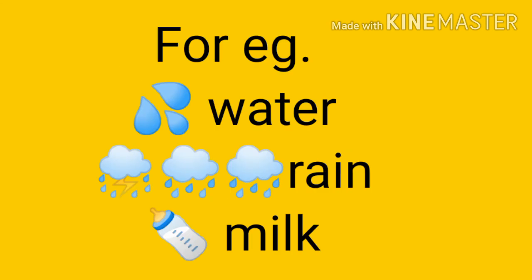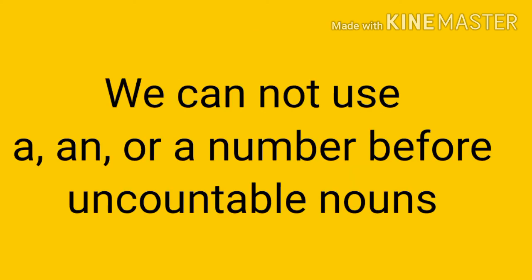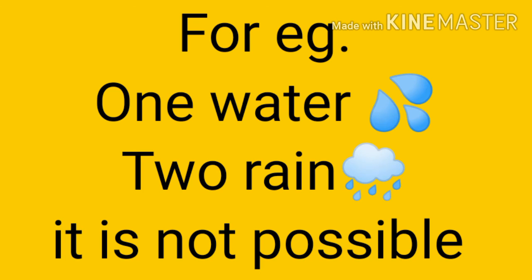For example, water — hum nahi bol sakte ek water, two water. Rain, milk — hum milk ko bhi number mein count nahi kar sakte hain. We cannot use a, an, or a number before uncountable nouns. Hum uncountable nouns ke aage koi bhi number ya a or an nahi laga sakte hain. For example, we can't say one water, we can't say two rain, we can't say three milk.